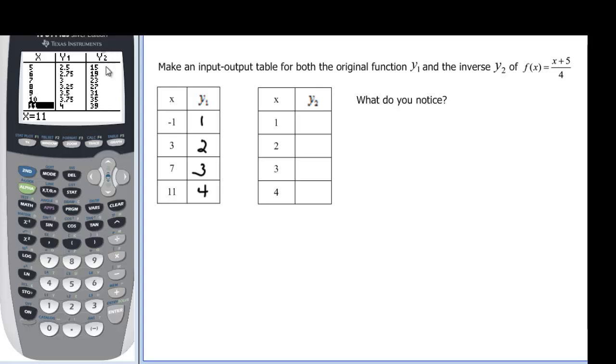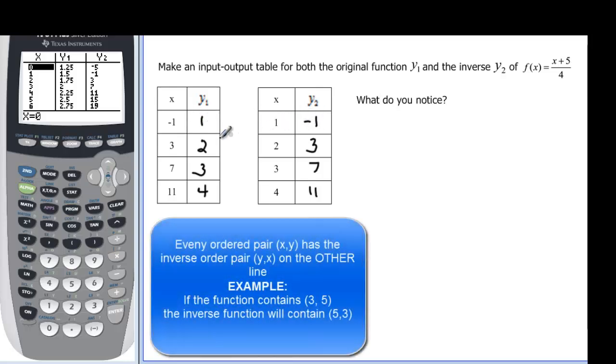And if I do the inverse function, that's my y2. So I come back up and look at it a little closer. When x is 1, over here at y2, it's -1. When x is 2, over here at y2, I have 3. x is 3, over here at y2, I have 7.